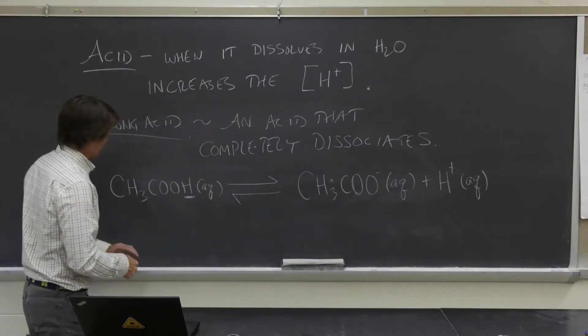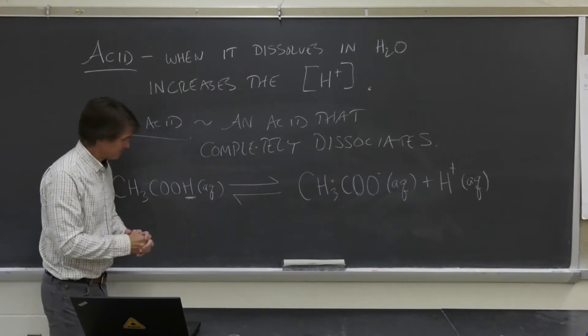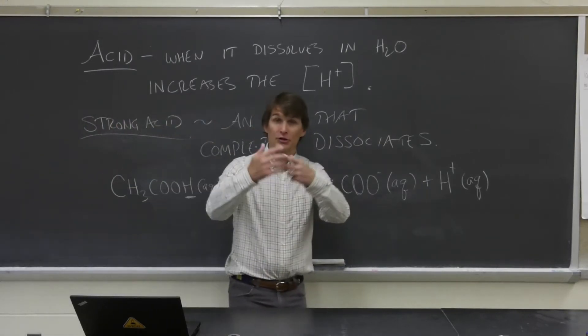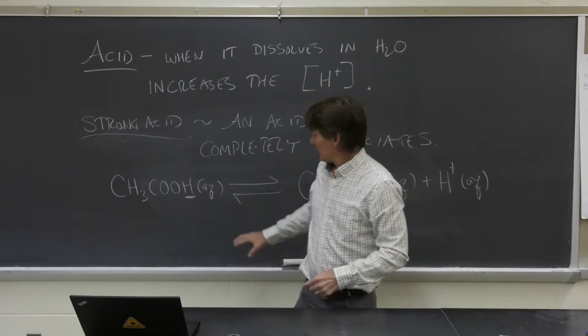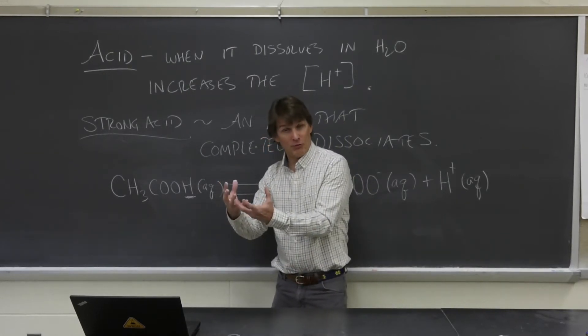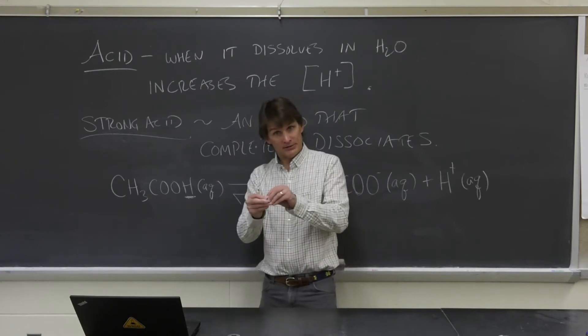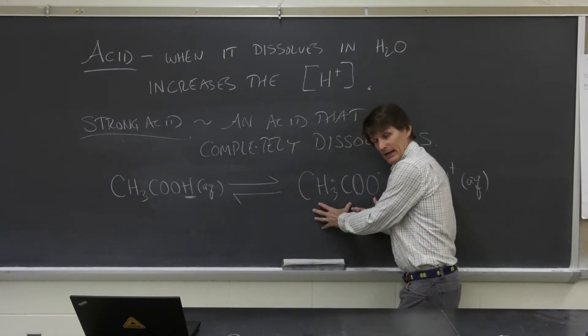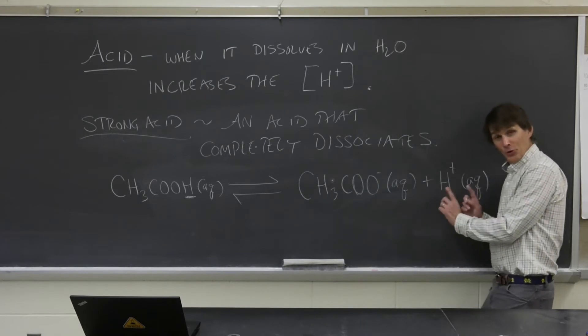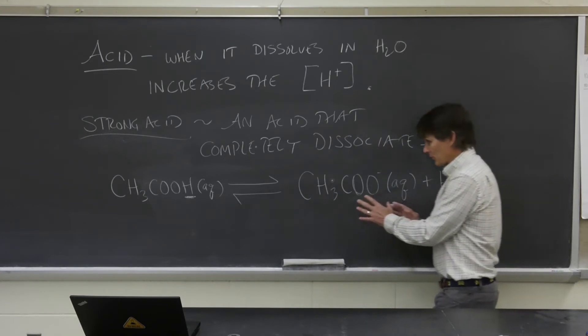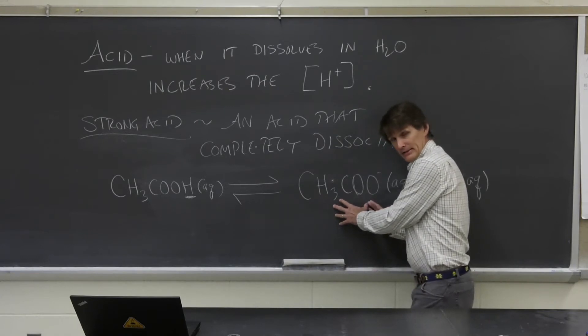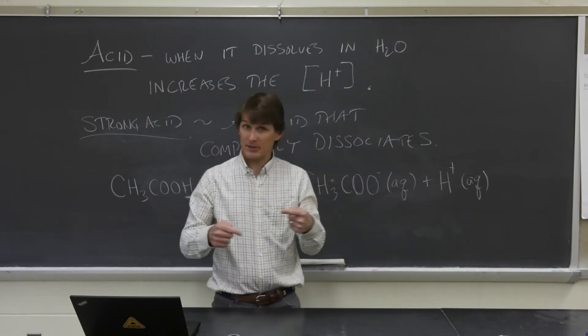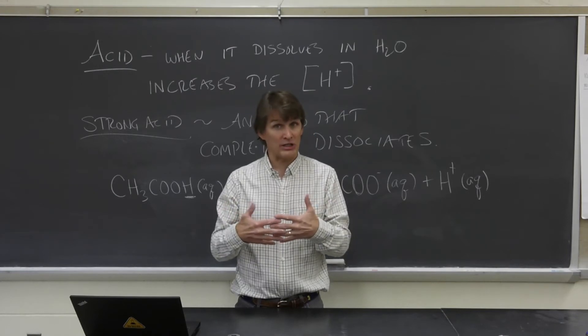But in this particular case, acetic acid, which is a weak acid, it doesn't completely dissociate. What you get is this reaction occurring in both directions at the same time. So you have some of this molecular form, acetic acid, that dissociates. This proton pops off, goes into solution, and you're left with the acetate ion. But you also have protons in the water that are going to react with the acetate and go back and form the full molecular acid. And this is happening at the same time.